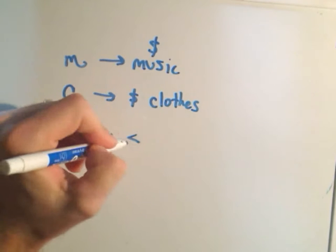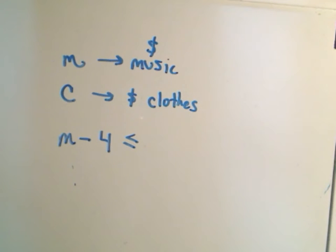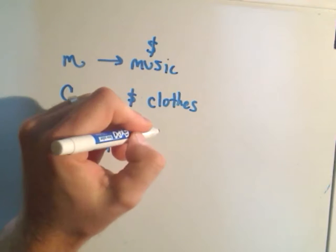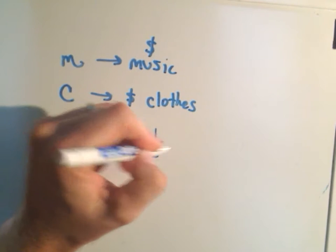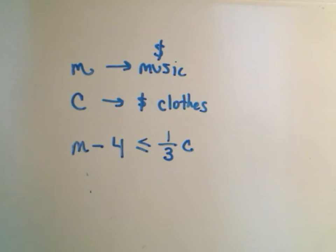And it says that has to be less than or equal to one-third of the amount that he spends on clothes. Well, if C is the amount he spends on clothes, one-third of that would be one-third C.